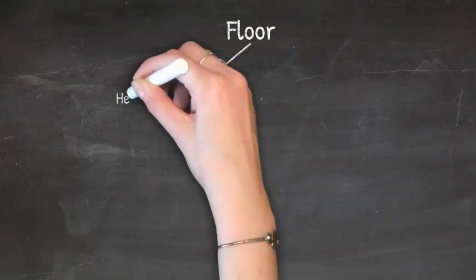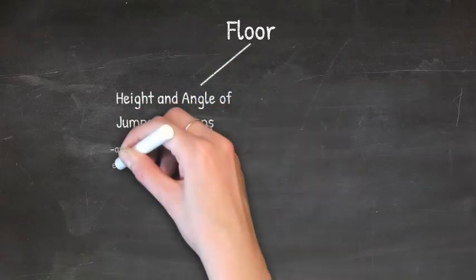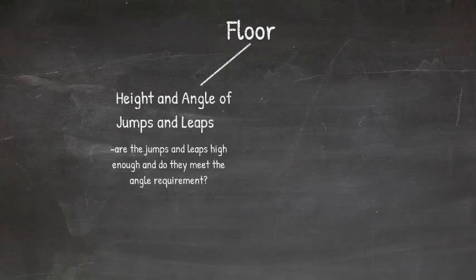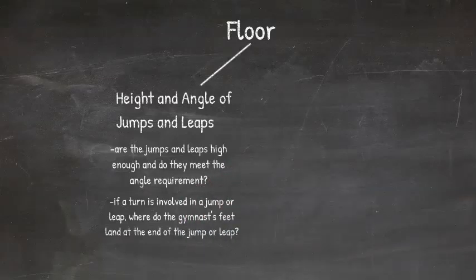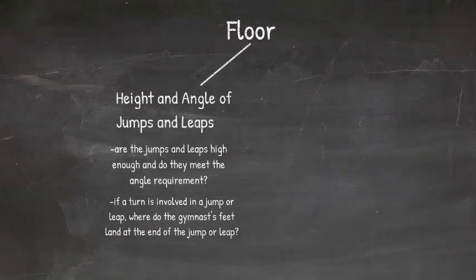On floor, similar to beam, the height and angle of jumps and leaps is very important. Every time a gymnast jumps or leaps, judges look to see if the jump or leap met the angle requirement and if the gymnast got sufficient hip rise off the ground. When a jump or leap includes a turn, judges watch the gymnast's feet very closely to assess what degree of turn was achieved — whether she completed the full degrees of her turn or was short — and those are deductions.